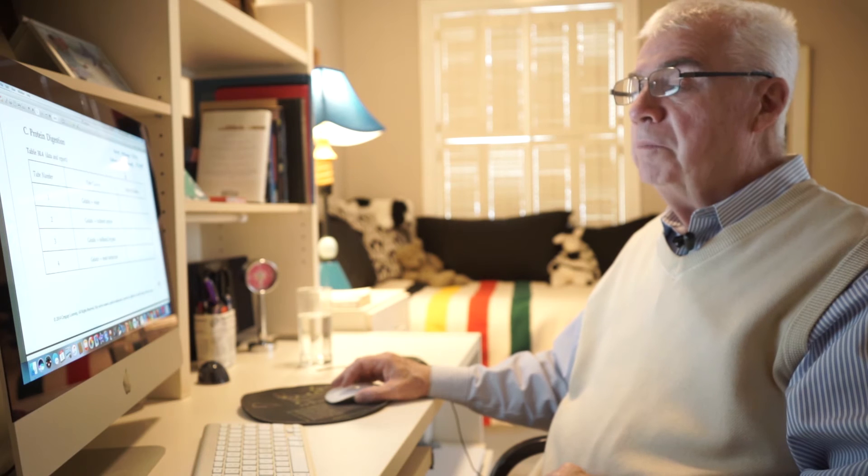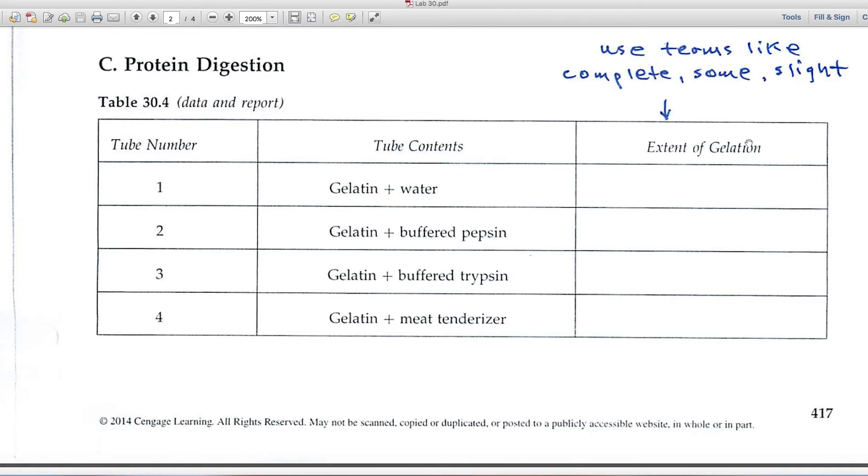And if that protein is denatured or destroyed, then that means it's not going to gel nearly as efficiently. So over here on the right-hand side, you'll be recording extent of gelation and using terms like complete gelation, or some, or slight – that would be great.